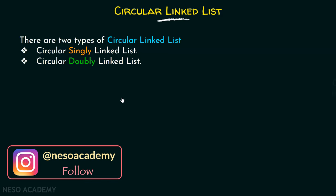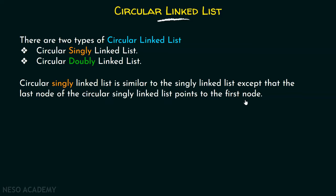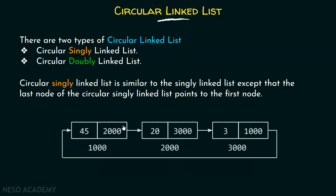Circular Singly Linked List is similar to the Singly Linked List, except that the last node of the Circular Singly Linked List points to the first node. This is the difference between a Circular Singly Linked List and a Singly Linked List. If we replace this address by null, then it becomes a Singly Linked List instead of a Circular Singly Linked List.